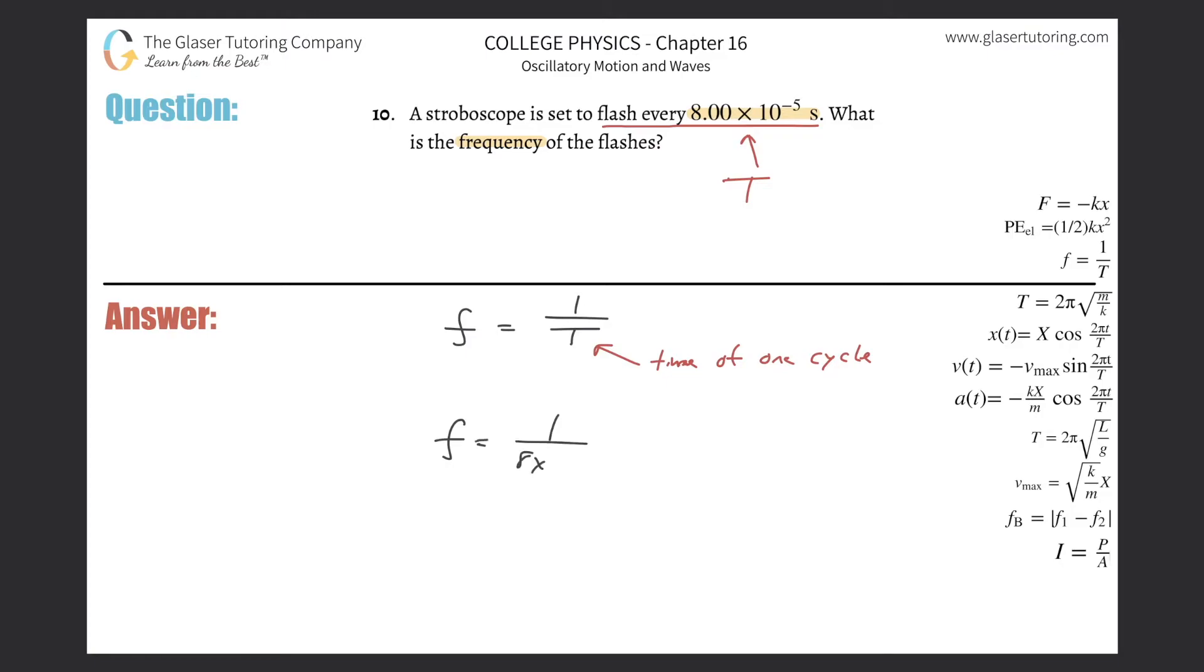So this is 1 divided by 8 times 10 to the minus 5th, and this is about 12,500 cycles, or in this case, flashes per second.